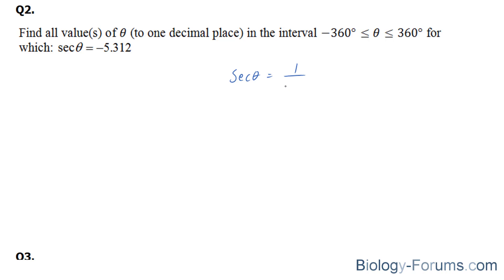Secant is 1 over cosine theta, or cosine theta equals 1 over secant. Like I said earlier, you tend to use the main trigonometric functions as opposed to the reciprocal ones because our calculator doesn't carry those values.